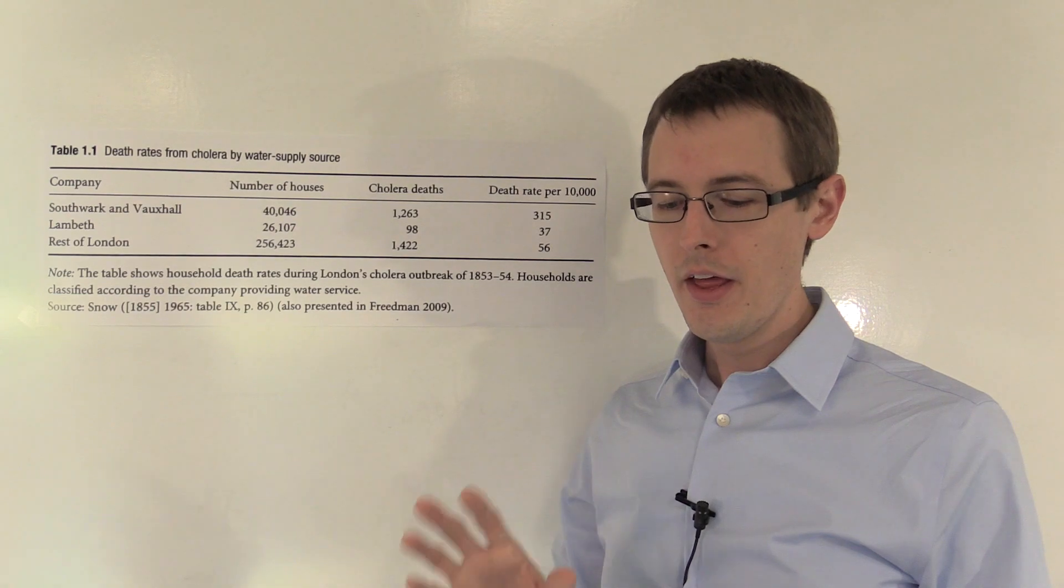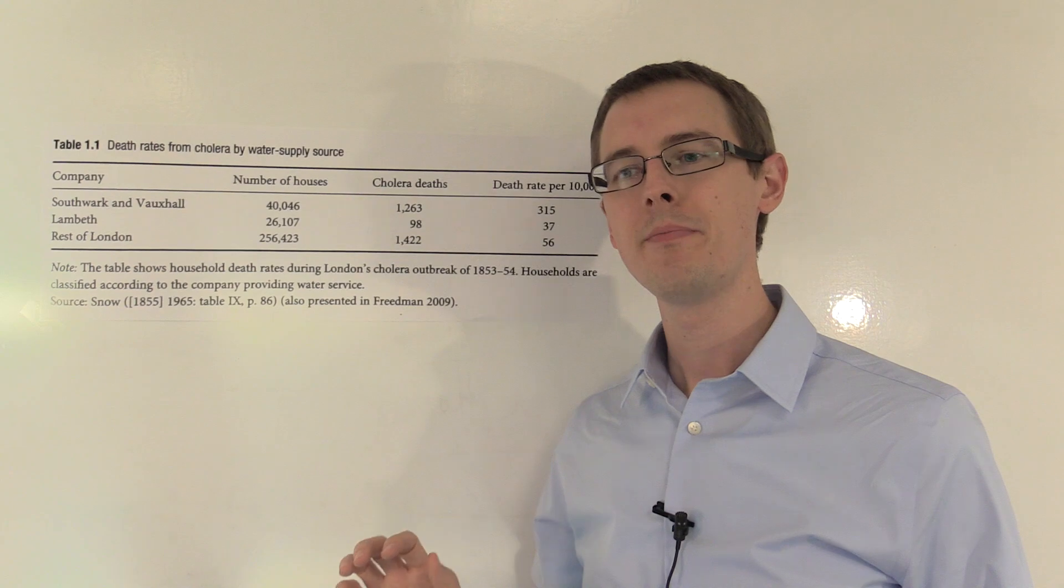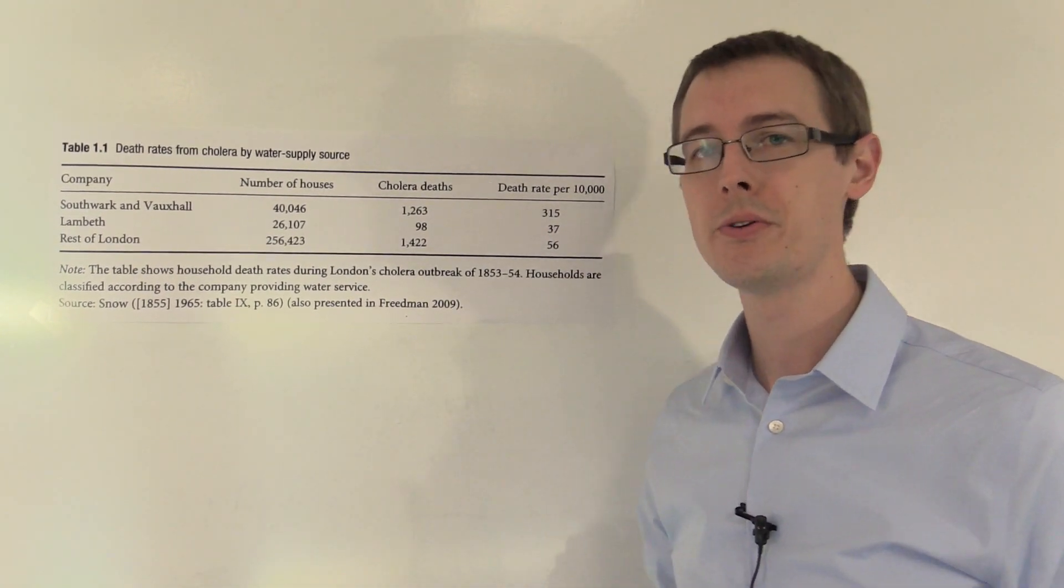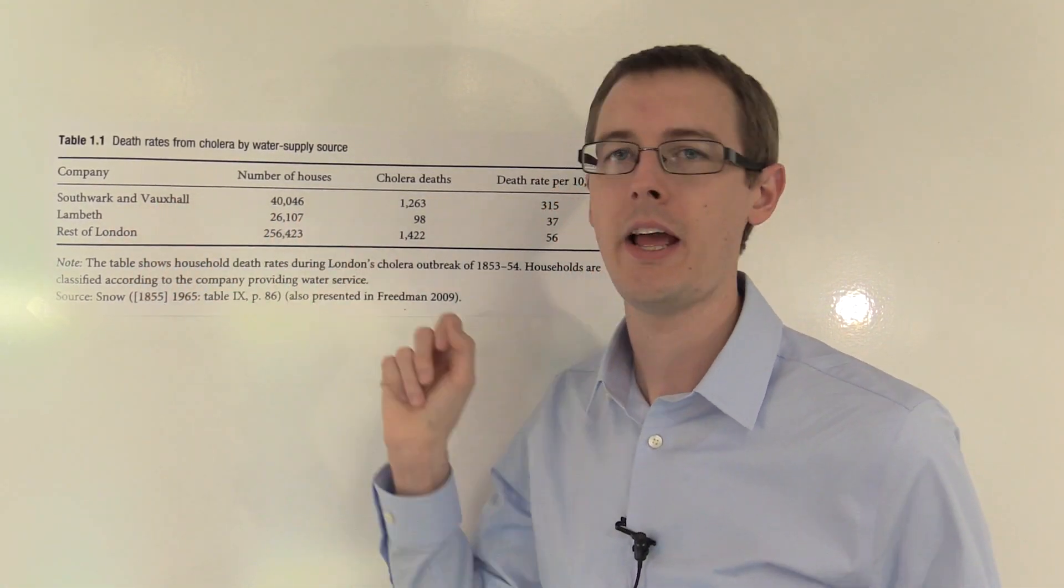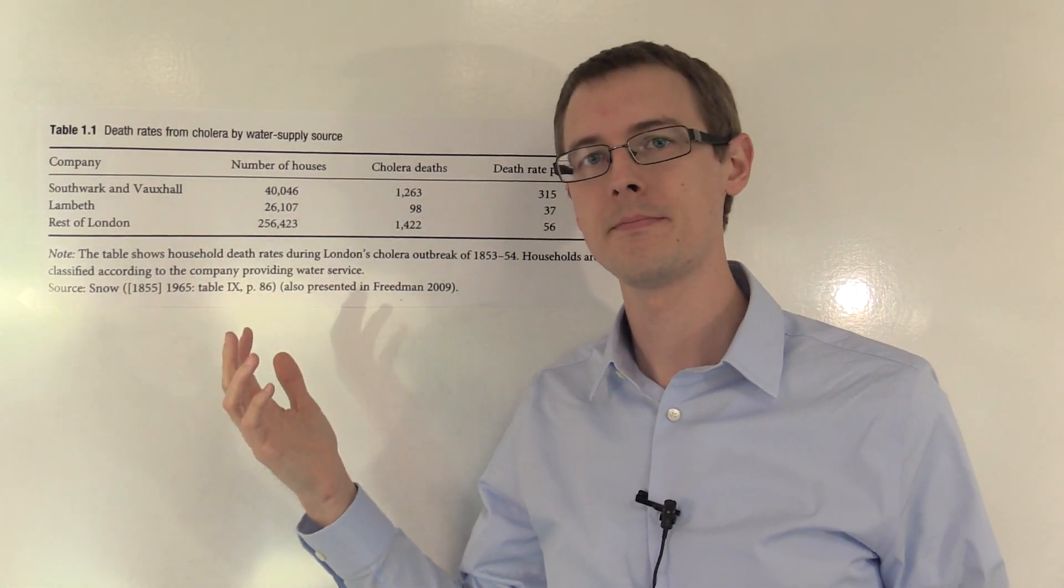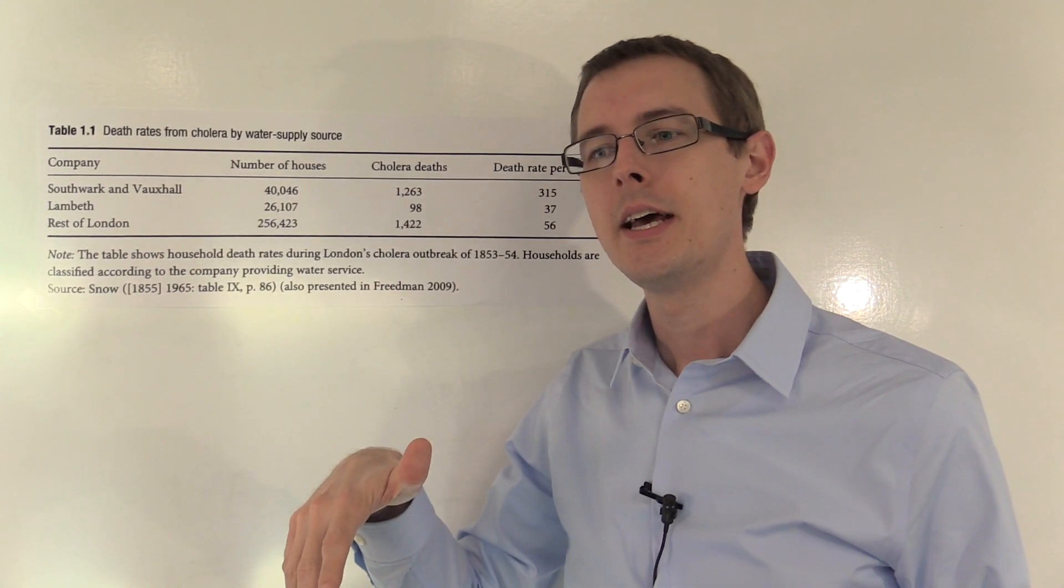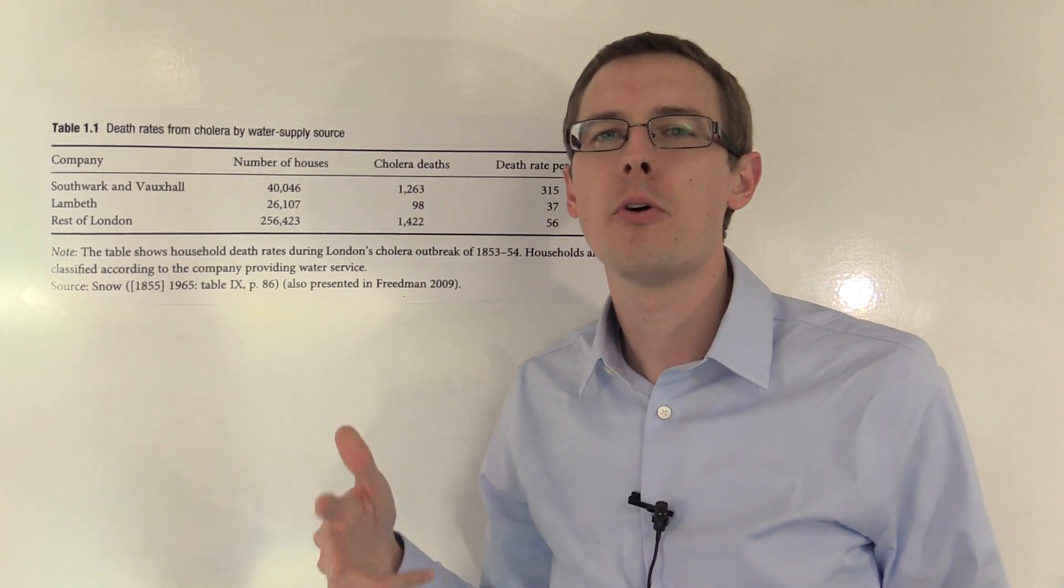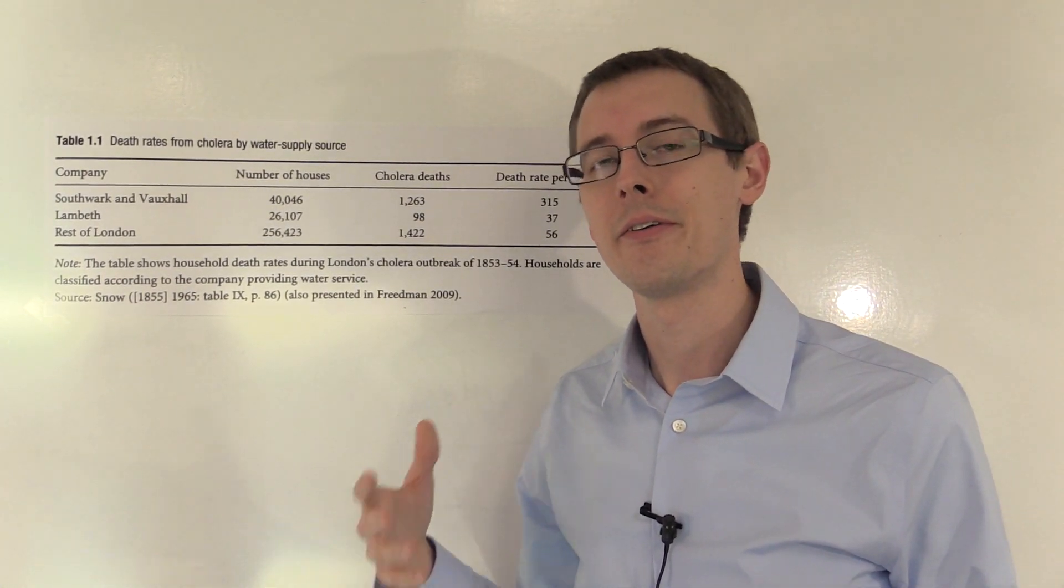Even though we've done that balance check and it looks good, we're still not guaranteed that we have balance on unobservables. For example, suppose there's really healthy people only chose the Lambeth company because they thought the Lambeth company was just healthier overall for some reason. They chose the Lambeth company. Then, when cholera hits, maybe it's not the water that's causing it, it's just the fact that healthier people are more robust and they're not going to get wiped out by cholera. That would be a confounder. That would be a problem here.